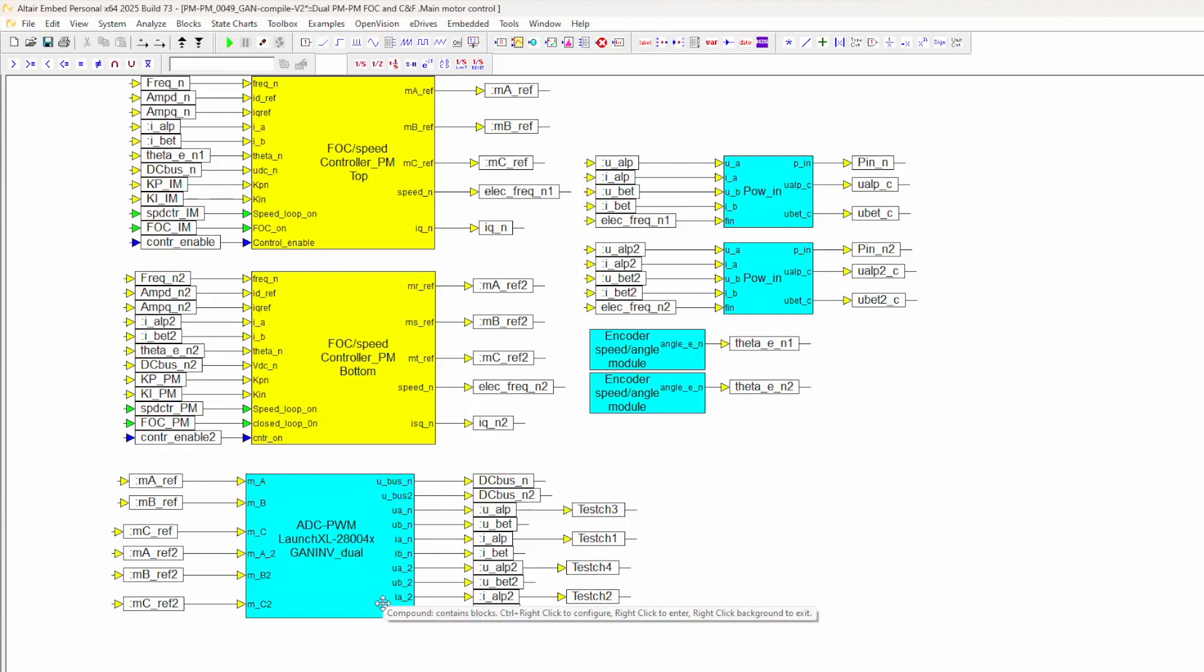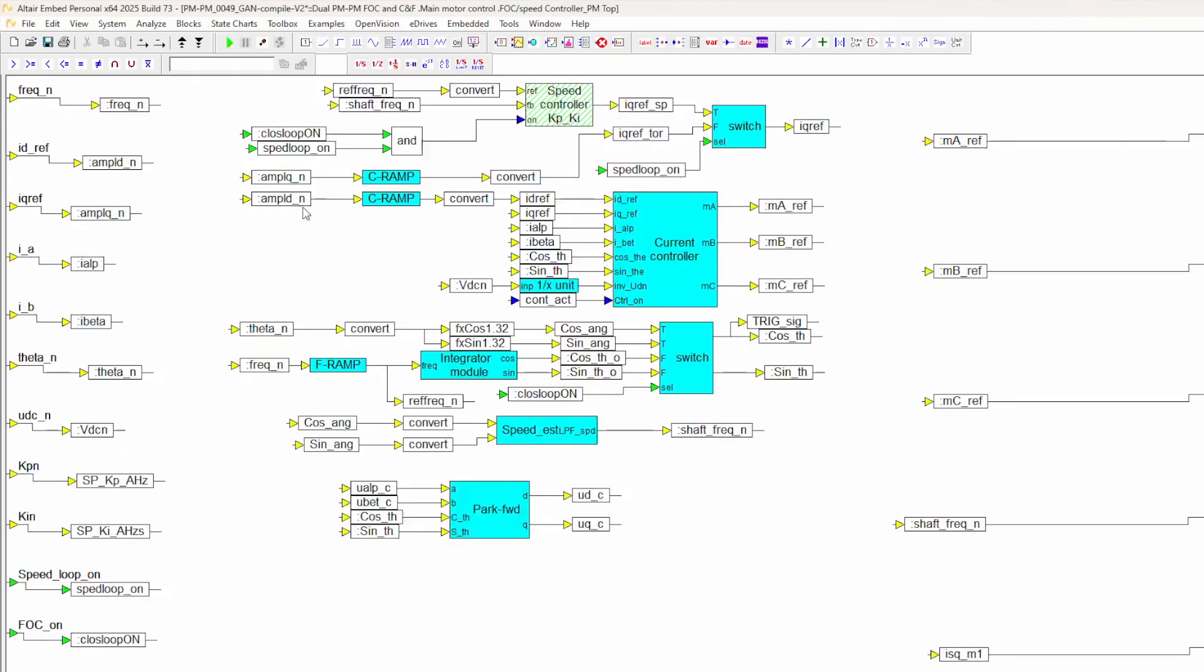So all of that is happening here. PWM for both is controlled at 20 kilohertz, sampling at 10 kilohertz. Looking into the controllers, it's really like a previous presentation webinar. We see the current control, the synchronous current control, and speed control.